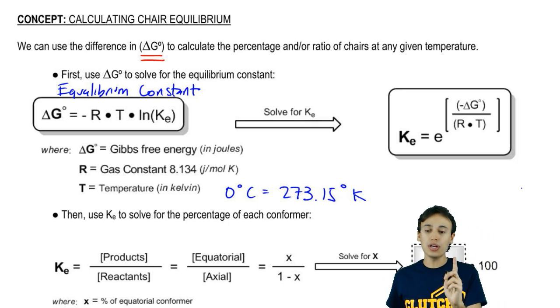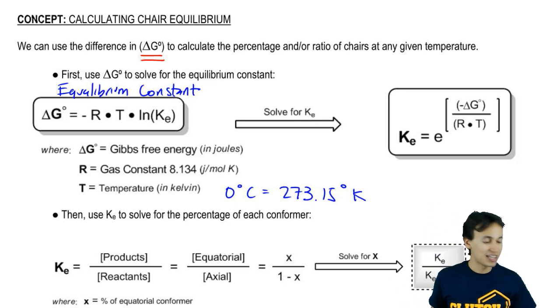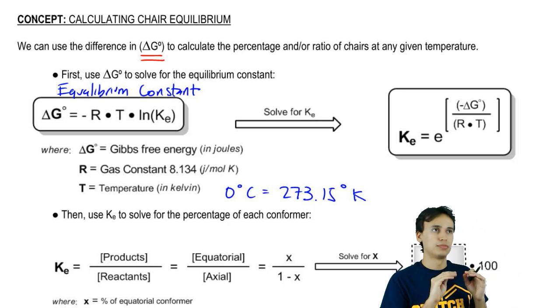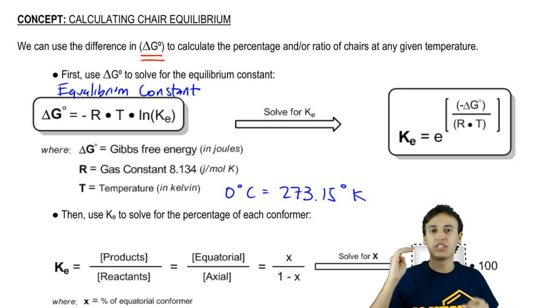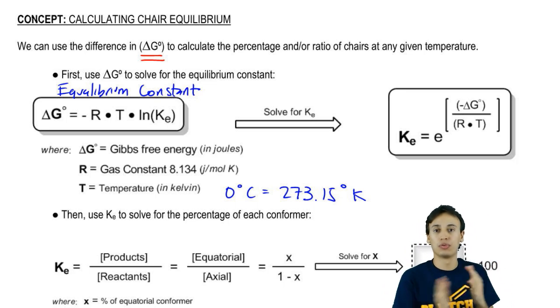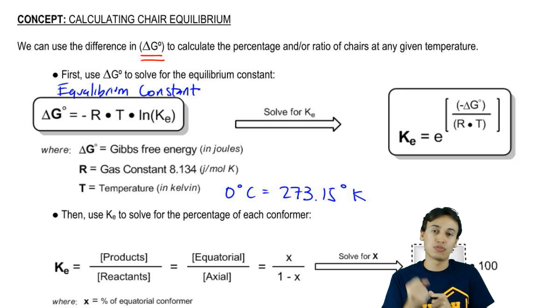Now, I do want to make one note of the delta G. Notice that this is negative delta G, but everything that we solved when we were doing A values, we were actually solving for positive delta G because we were actually looking at the less stable one. We were looking at how much energy do we have to put into the system to go to axial.